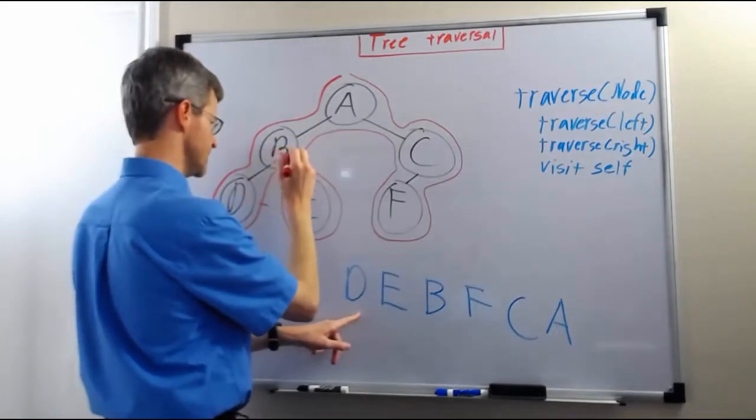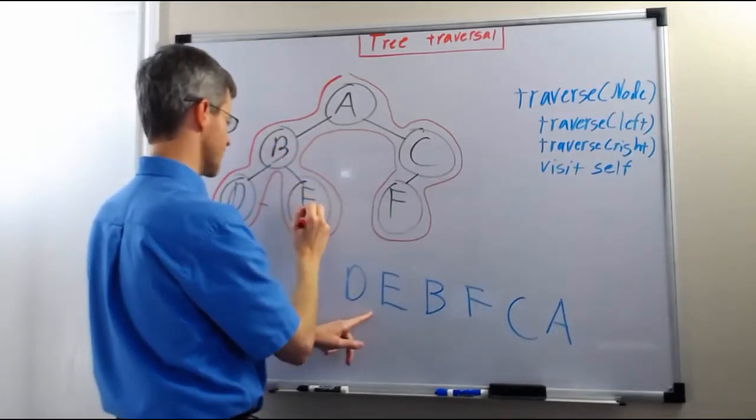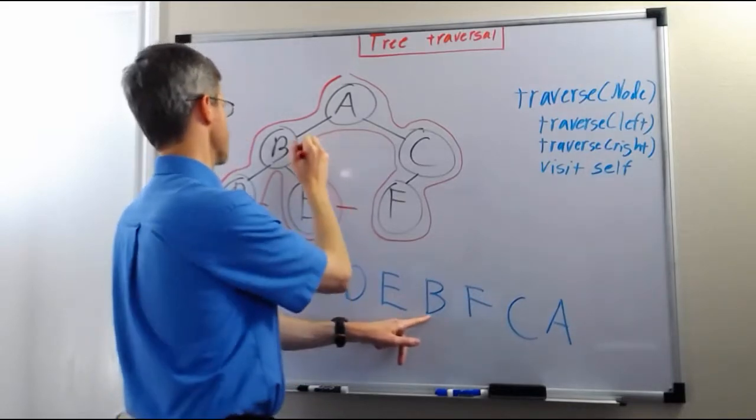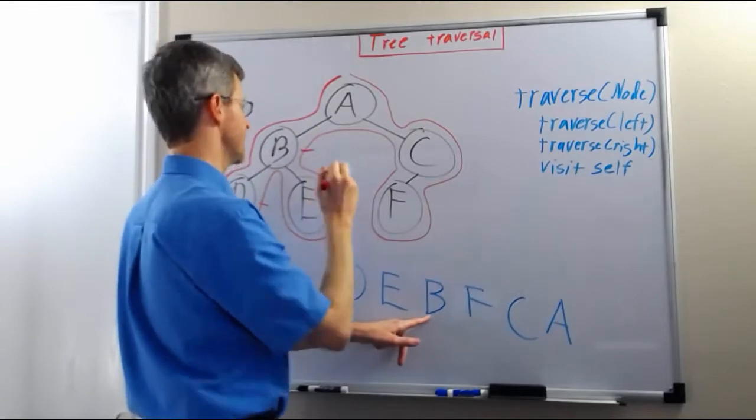We come up here to B, we go under B, then we come down under E, we go to the right of E, so we visit E. Then we come over here to the right of B, we visit B.